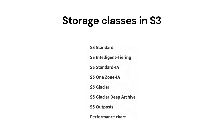Fourth class is S3 One Zone Infrequent Access — this class is for data that is accessed less frequently but requires rapid access when needed. Unlike other S3 storage classes which store data in a minimum of 3 availability zones, S3 One Zone Infrequent Access stores data in a single AZ and costs 20% less than S3 Standard Infrequent Access. Fifth class is S3 Glacier — this class is for long-term backups and archives with retrieval options from 1 minute to 12 hours. Sixth option is S3 Glacier Deep Archive — this class is for long-term data archiving that is accessed once or twice a year and can be restored within 12 hours.